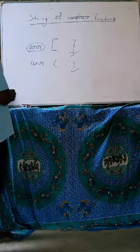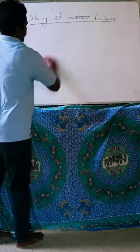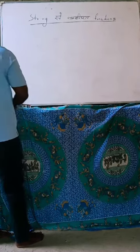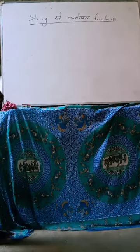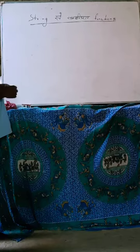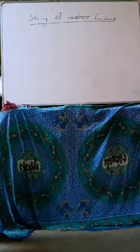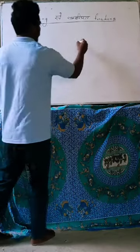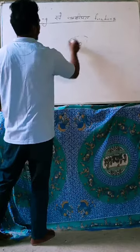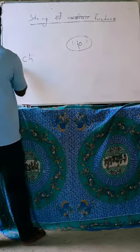The string is a one-dimensional array of characters. The last character of a string is a null character. If someone has declared a string, we will refer to that null character.